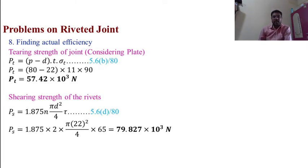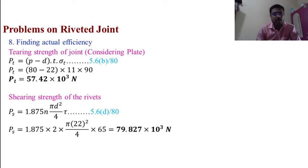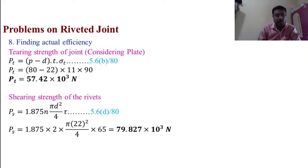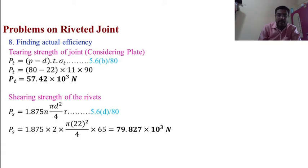Shearing strength: Ps = 1.875 × n × (π/4) × d² × τ — equation 5.6D, page 80. Ps = 1.875 × 2 × (π/4) × 22² × 56 = 79.827 × 10³ N.